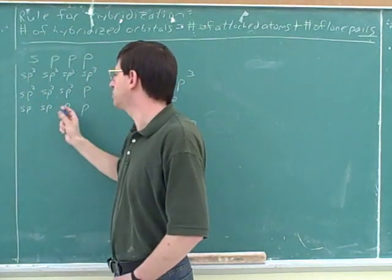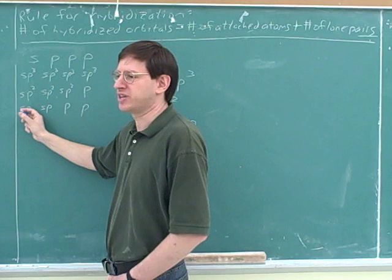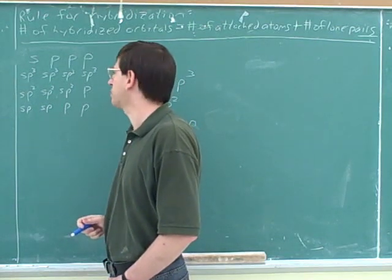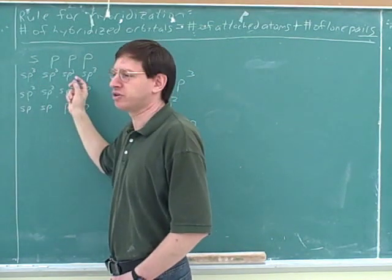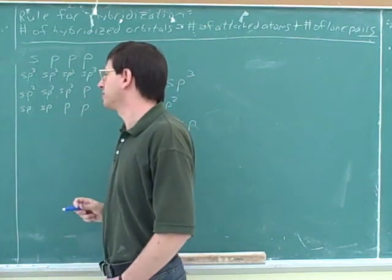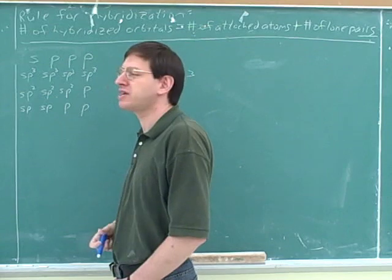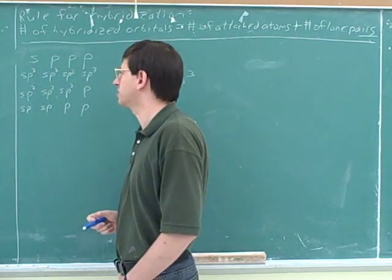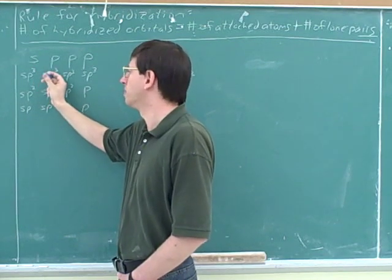Which hybridized orbital type has the most s-character? sp, because it's 50% s — compared to 33% for sp2 and 25% for sp3. Which has the most p-character? sp3, since it's three parts pear and only one part strawberry. Of course, the unmixed s orbital is pure strawberry and the unmixed p is pure pear — but among hybridized orbitals, sp has the most s-character and sp3 has the most p-character.